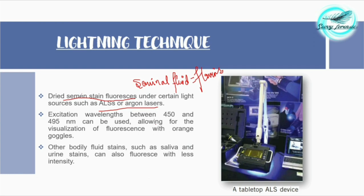We use excitation wavelengths between 450 and 495 nanometers, which allows for the visualization of fluorescence with orange goggles. You have to use orange goggles to visualize the seminal stains after irradiating them with a wavelength of about 450 to 495 nanometers. Other bodily fluid stains such as saliva and urine can also fluoresce, but with less intensity.